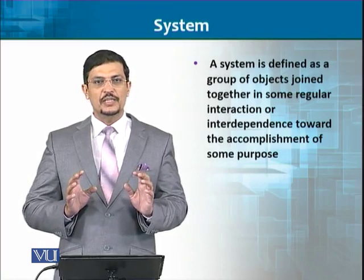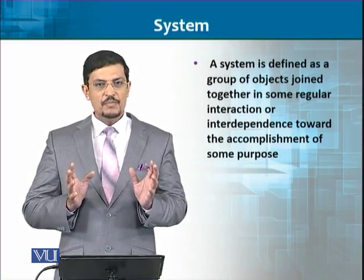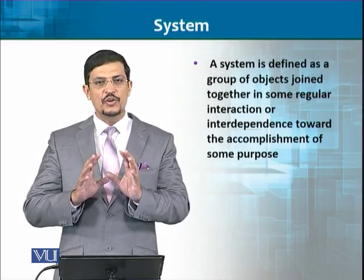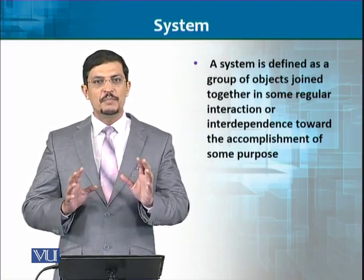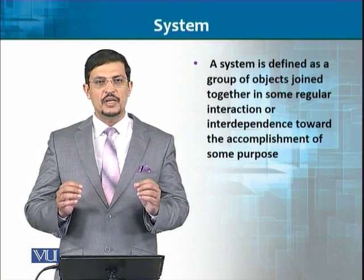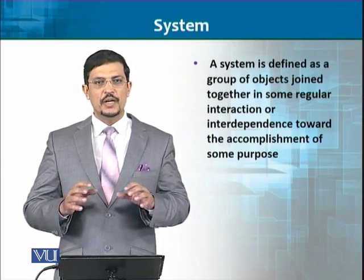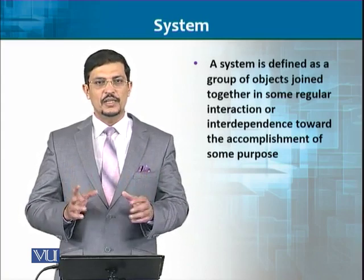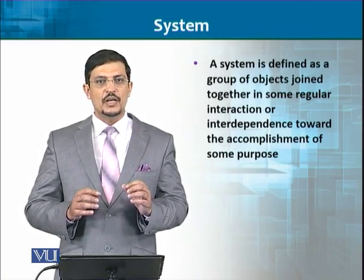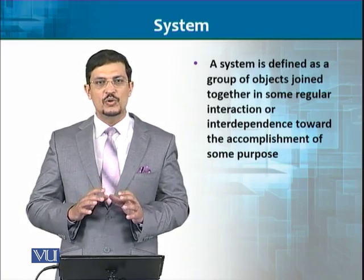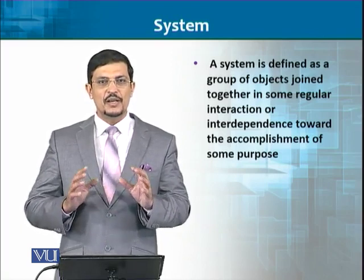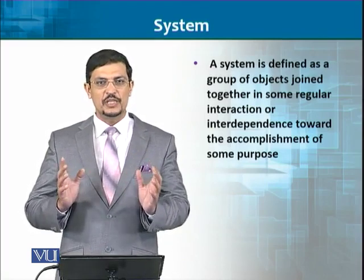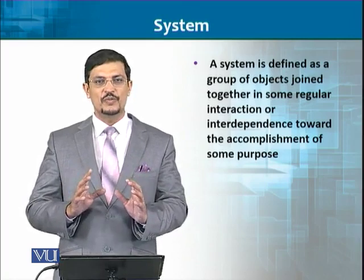The first thing we want to talk about is the system. A system is a group of objects that we see exhibiting unified behavior. For example, when we look at a flock of sheep moving, they behave as a system — as individual sheep but acting together overall. Similarly, when we say America's foreign policy or Pakistan's foreign policy, that means it is a system — behaving as one unified object.